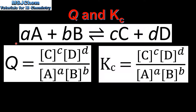Let's start with a review. Here we have the expression of the reaction quotient Q and the equilibrium constant Kc for the reaction where A reacts with B to form C and D in the forward reaction, and in the reverse reaction D and C react together to form A and B. The lowercase letters are the coefficients in the balanced equation. Both Q and Kc have the concentration of the products in the numerator raised to the power of the coefficient, and the concentrations of the reactants in the denominator also raised to the power of the coefficient.